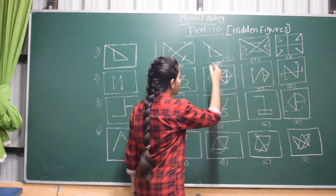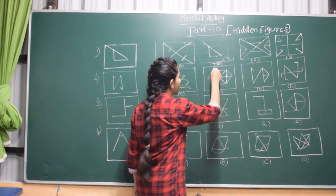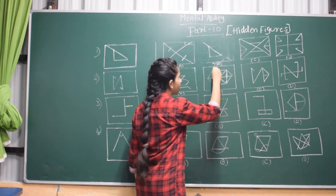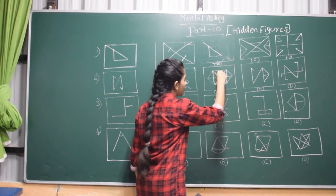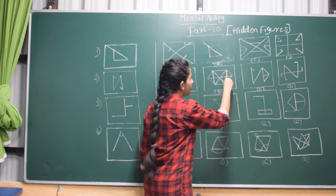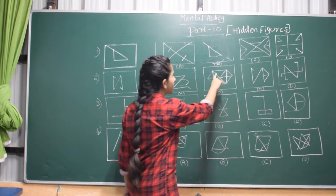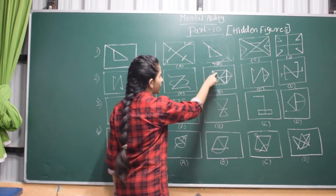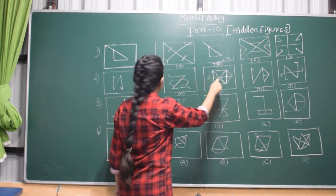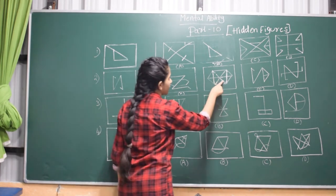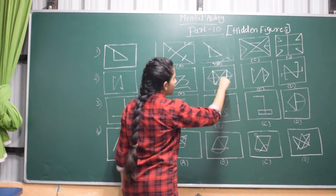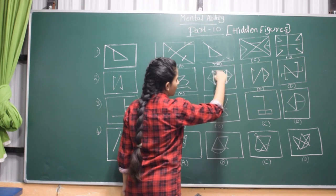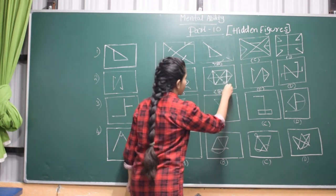If you go to option B, this is the answer but you cannot observe it so easily. There is an N figure here, and if you erase this line, you will get to know that here there is one line and here there is one line. So there is one N and there are two lines at both the edges. So this is the answer.